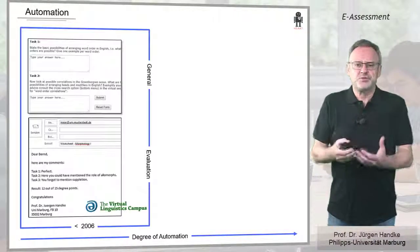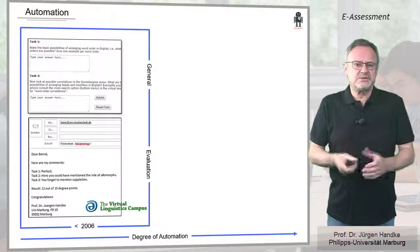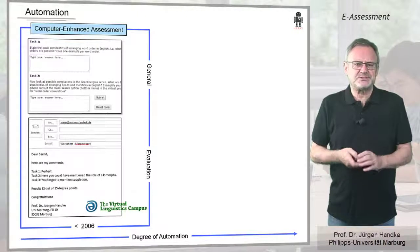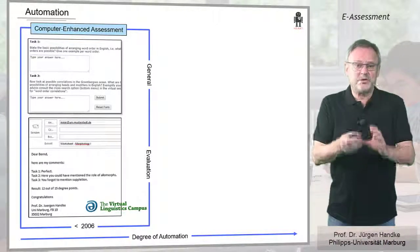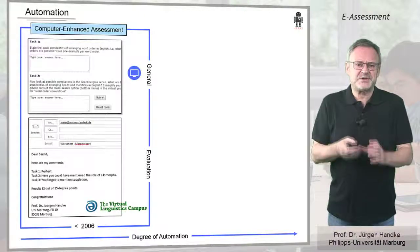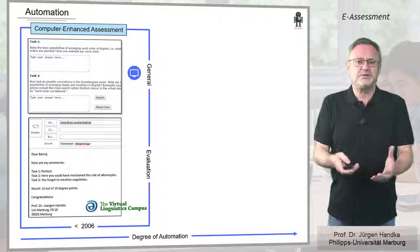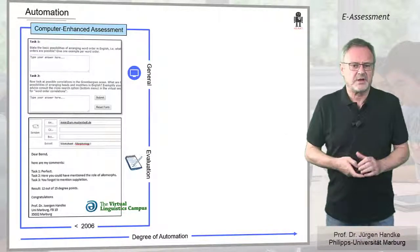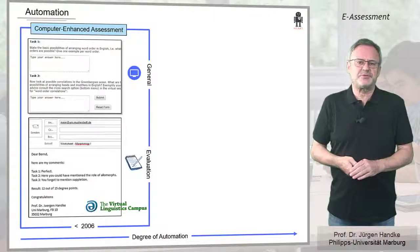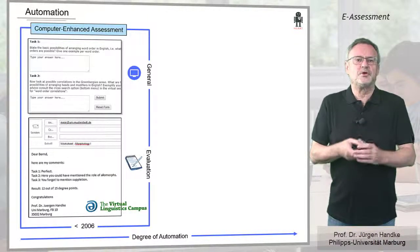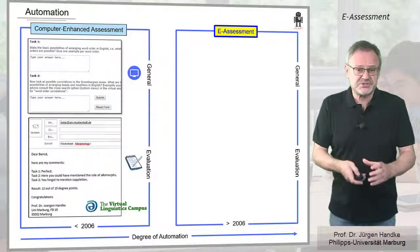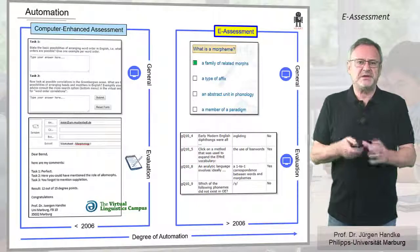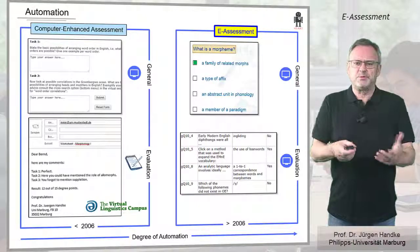For example, on the Virtual Linguistics Campus, our linguistic e-learning platform, we used computer-enhanced assessment until around 2006, although we only computerized the presentation of questions. The evaluation was carried out by hand and was delivered via email. However, since 2006 we have gradually been moving to a full automatic evaluation, at first with simple multiple-choice tests, later also with many other assessment types, which we will look at in a second.